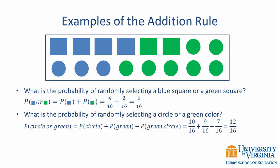This example shows the importance of subtracting off that joint probability. If we had not done that, we would have had a probability of 19/16ths, which is not a properly defined probability — it's not possible given our definition of probability. Therefore, since we have events that are not mutually exclusive, we have to subtract off the part where they overlap, which in this case is 7/16ths.